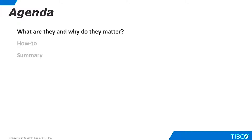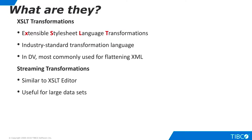Let's begin by discussing what XSLT and streaming transformations are and why they are important for data virtualization. XSLT stands for Extensible Style Sheet Language Transformations. It is an industry standard language used for transforming XML data structures into different formats, including other XML structures, HTML, plain text, and so on. For data virtualization, the most common use case for XSLT is flattening XML documents so that they can easily be joined with data from databases and flat files.